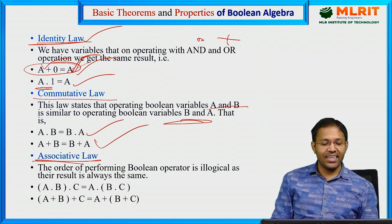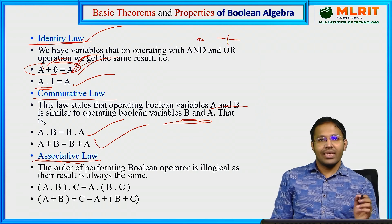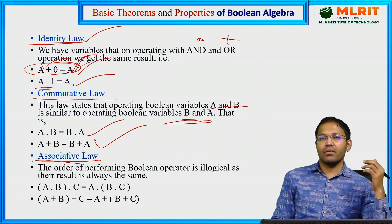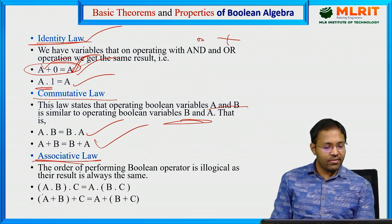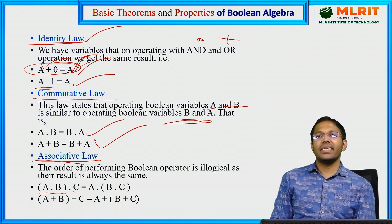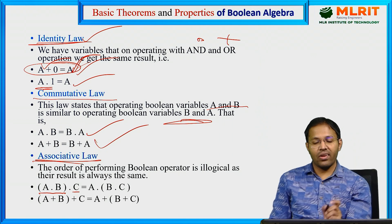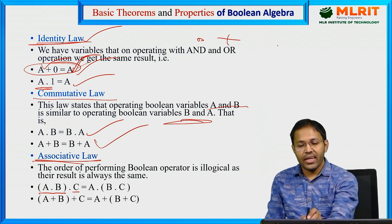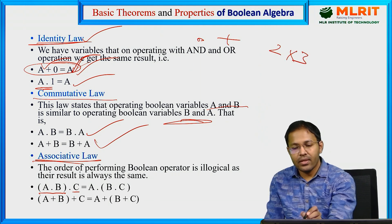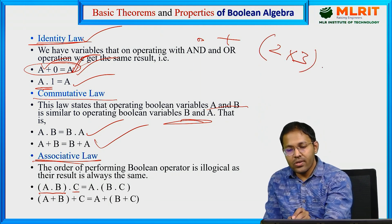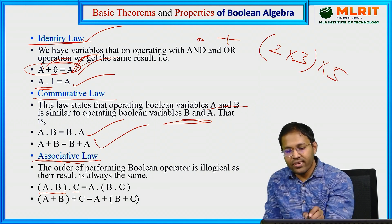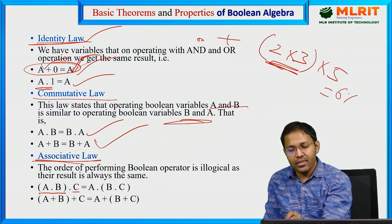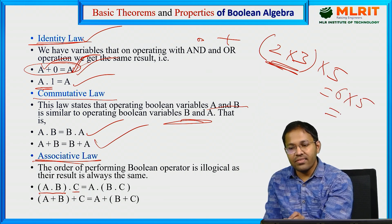Next, we have Associative Law. Here the order of performing Boolean operator is illogical. Suppose if you have A into B multiplied by C. Let us take the example of regular algebra. Suppose if we have 2 into 3, and then into 5. First let us perform this, 2 into 3 is 6, again 6 into 5 gives us 30.